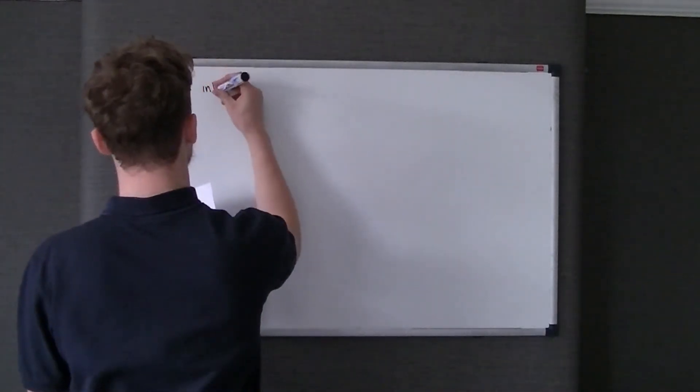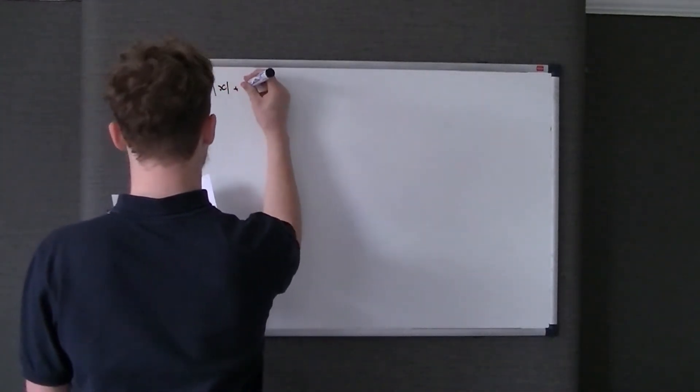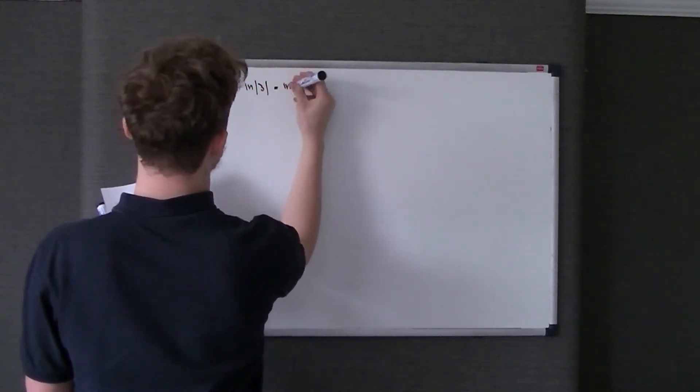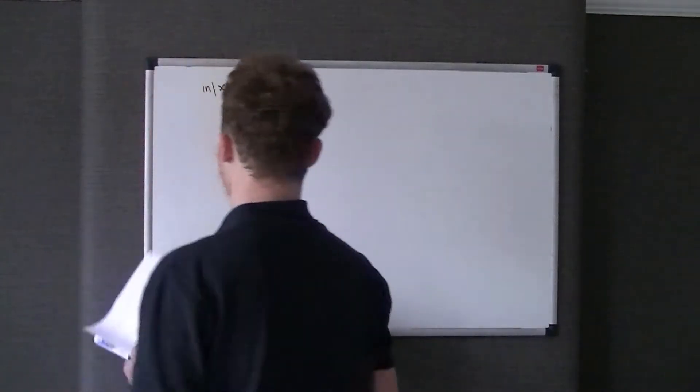So the first question is from June 2007. The question is find the exact solutions to the equations, and it lists two equations, obviously for 1a and 1b. 1a, it says ln x plus ln 3 is equal to ln 6, find x.